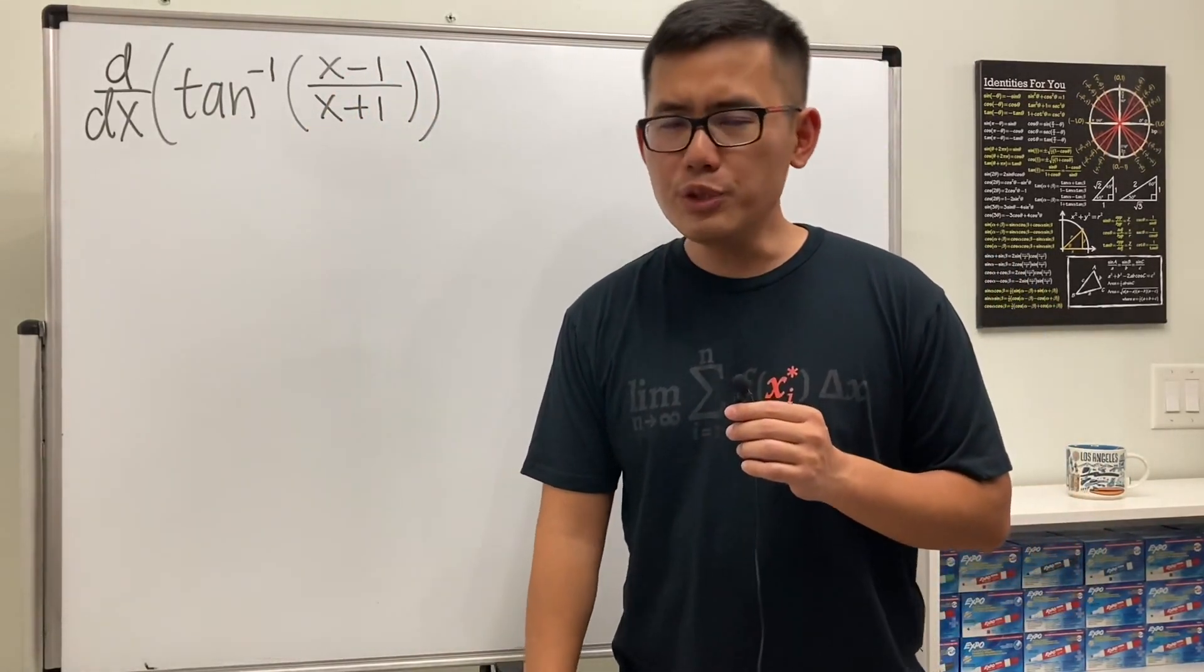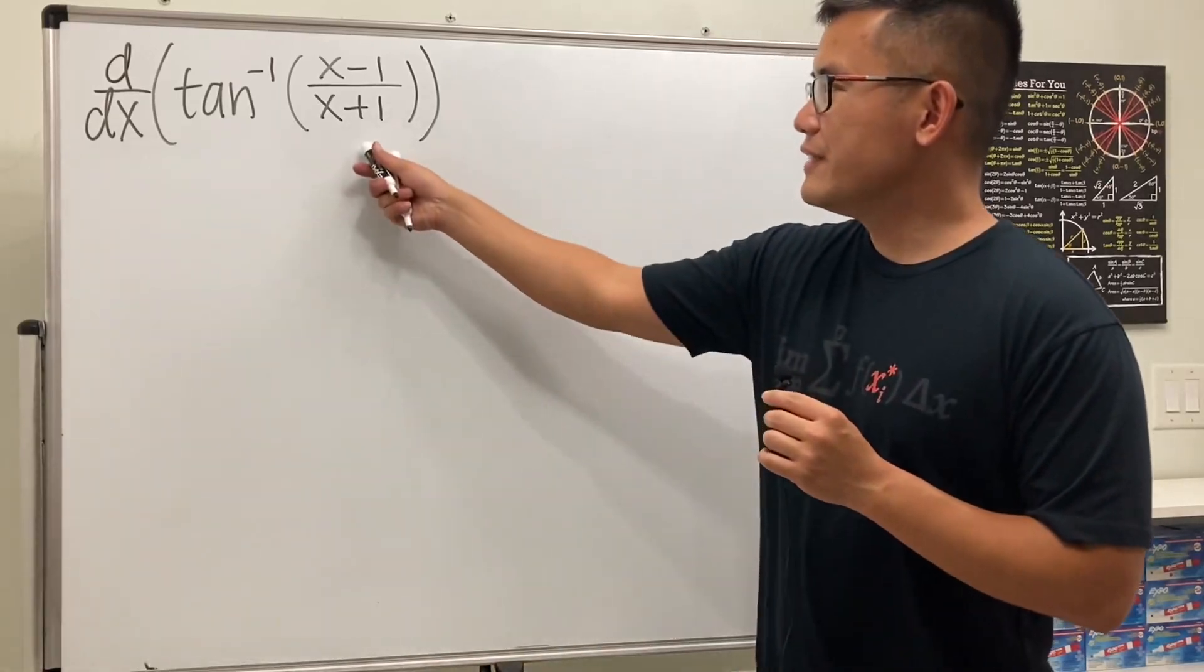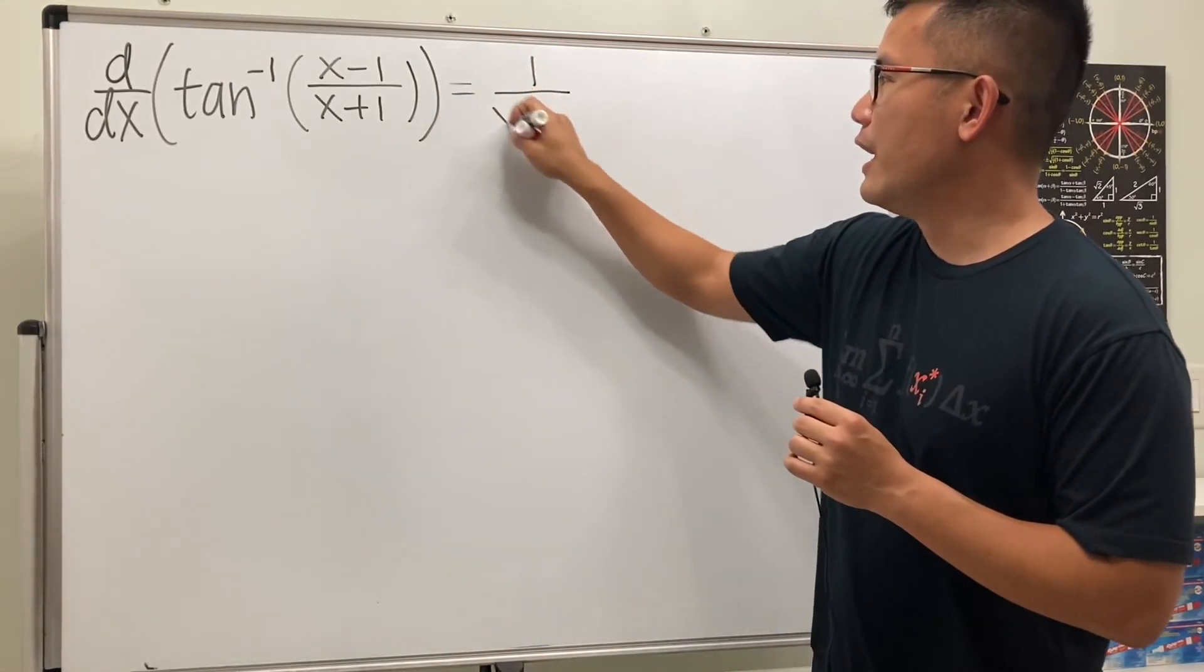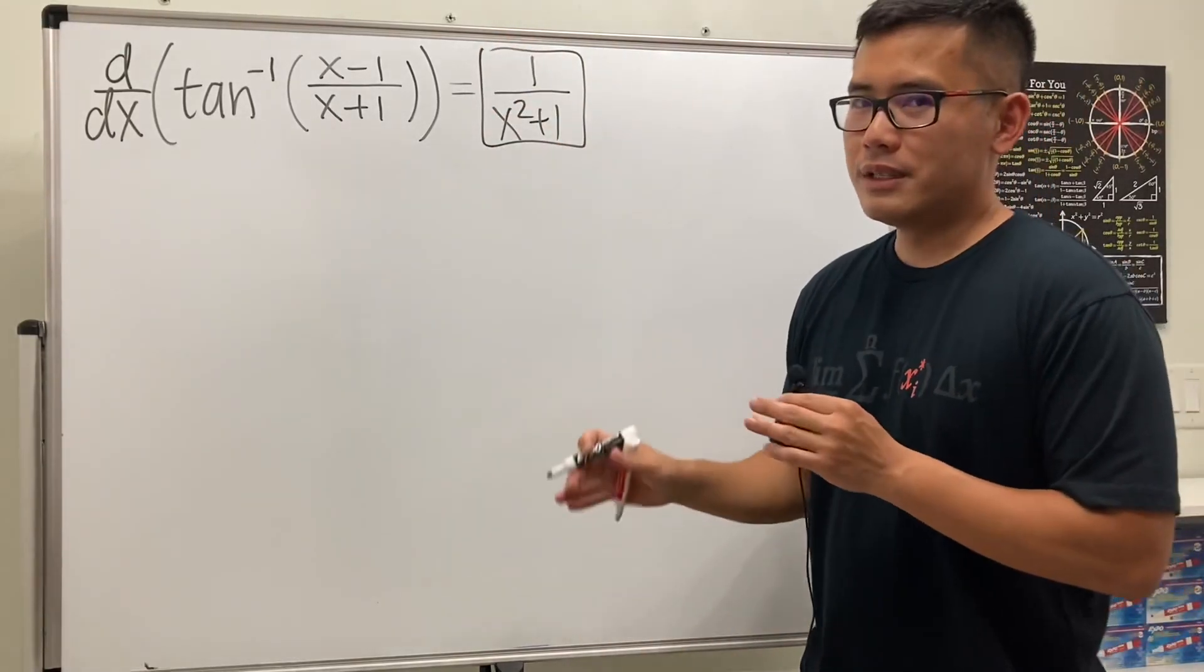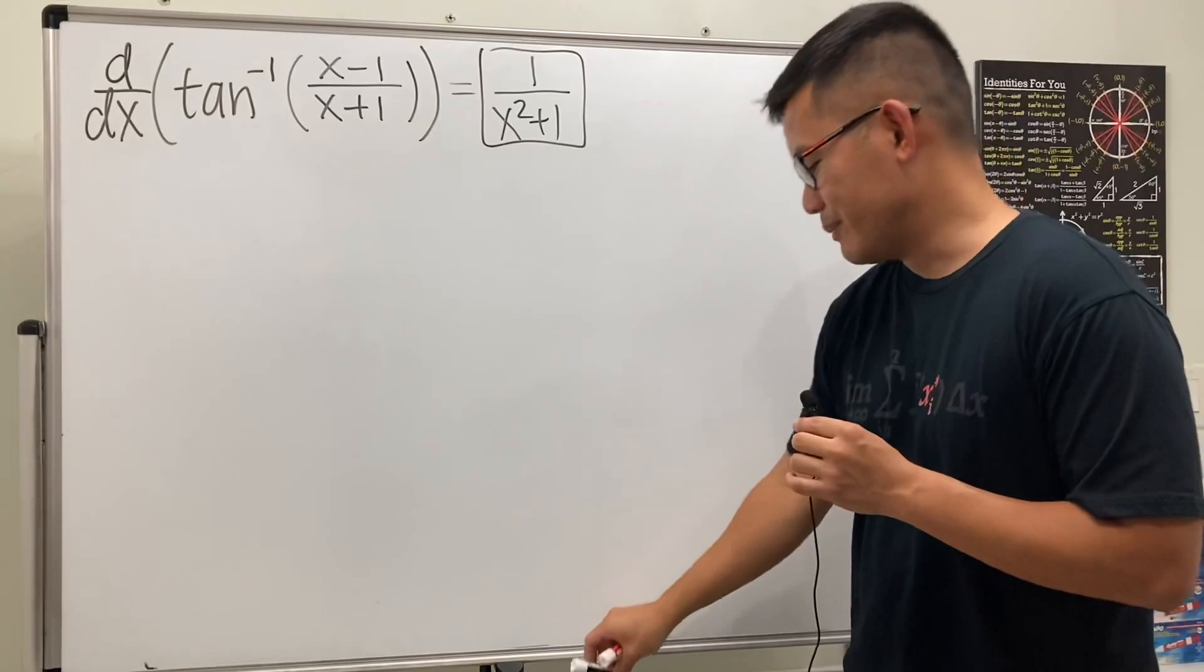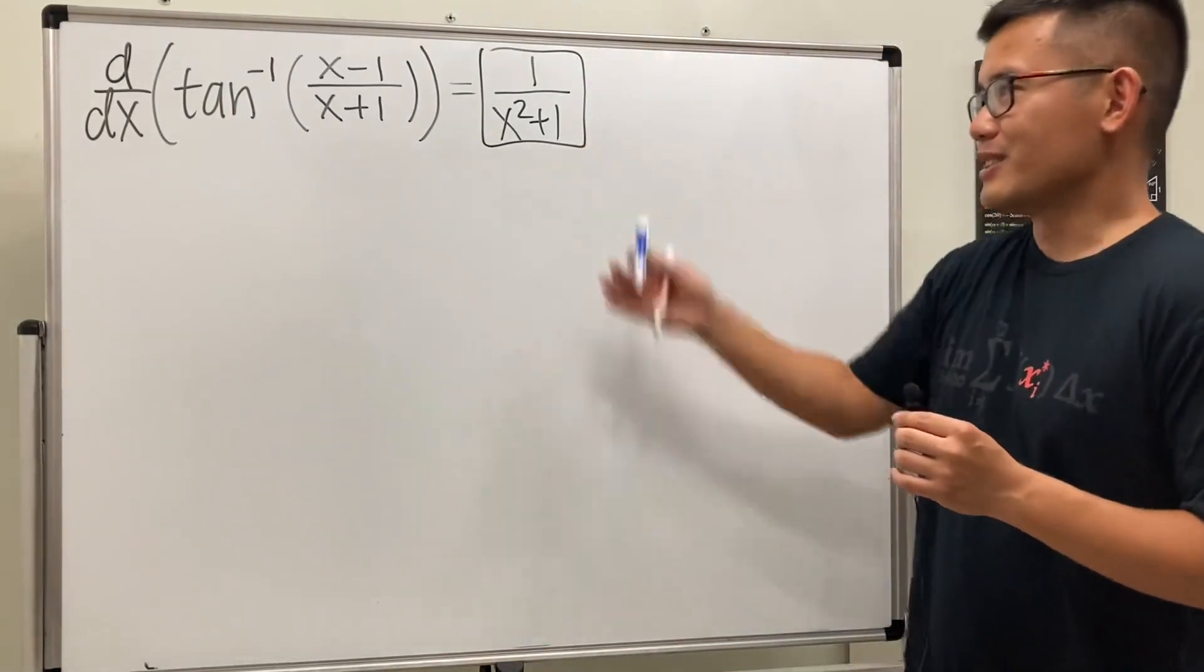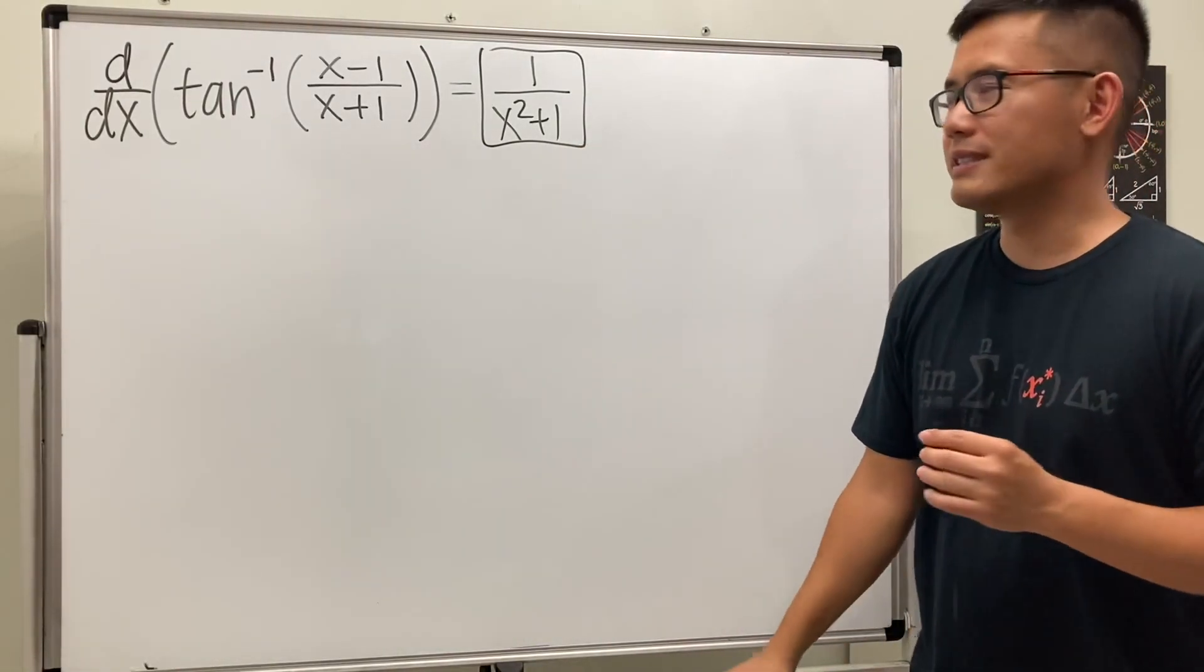And the reason that this is so interesting is because the answer for this right here is equal to 1 over x squared plus 1. I'm not kidding. Also, there are some small technicalities I have to mention. But yeah, it looks like it's just this. And I know you guys should be surprised right now.